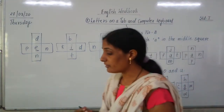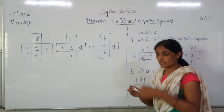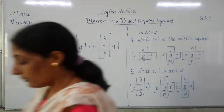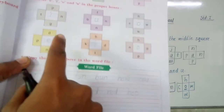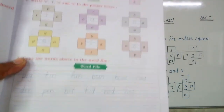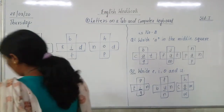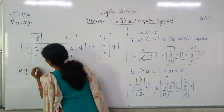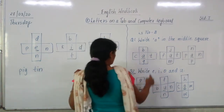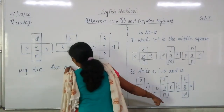After that, all these words we have to write down. There is a word file given here — can you see the word file? Downside, the word file is given. All these words you have to write in this word file. For example: T-I-G, T-I-N-T, P-I-G, T-I-N-T, then F-U-N, B-U-N, F-U-N, B-U-N.